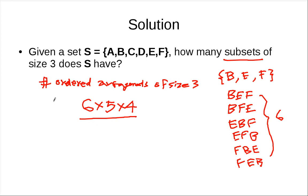If you pick a subset of size 3, you can rearrange it in six ways. So the number of subsets of size 3 is this divided by 6, and that's 20.